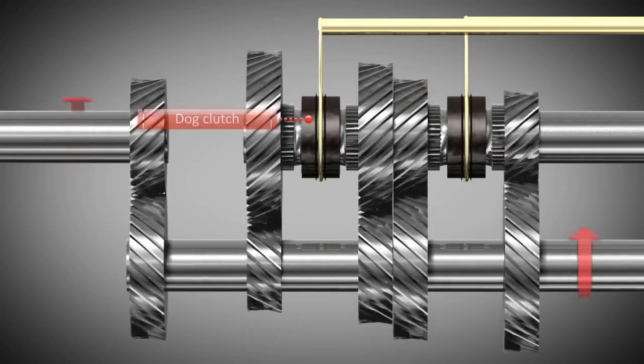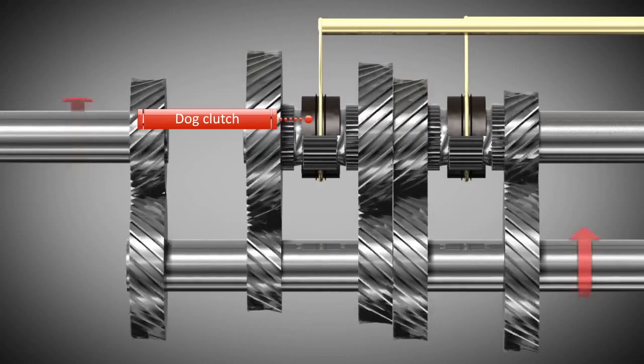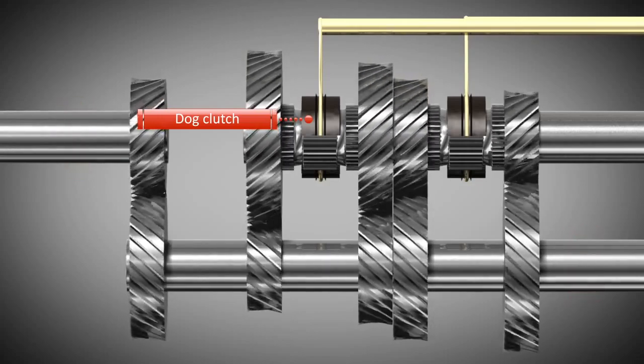Locking a gear wheel to the output shaft is possible through a dog clutch. Here, a tooth system is fixed to the shaft.